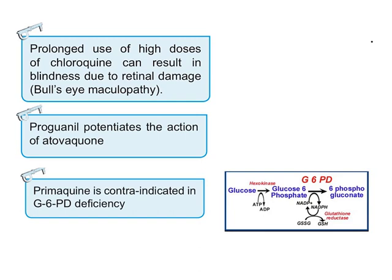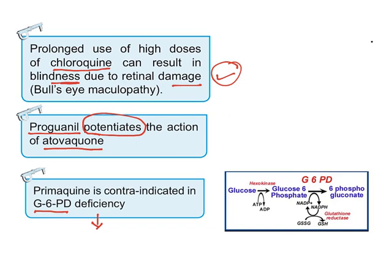Some important points: prolonged use of chloroquine may cause blindness due to retinal damage, so it should not be used for a long time. Proguanil is usually given in combination with atovaquone because it potentiates atovaquone's action. Primaquine is contraindicated in patients with glucose-6-phosphate dehydrogenase (G6PD) deficiency.